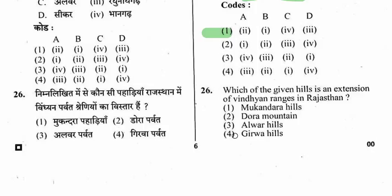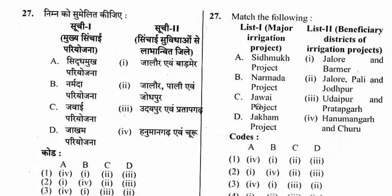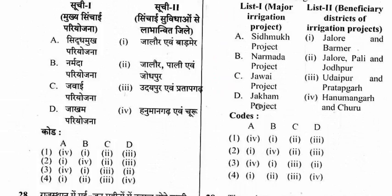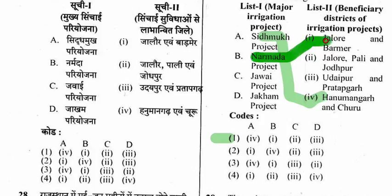Question 27: Match major irrigation projects and their beneficial districts. The right answer is option 1. Siddha Mukh project benefits Anumangarh and Churu. Naramrida project benefits Jalor and Barmer. Jawai project benefits Jalor, Pali, and Jodhpur. Jakham project benefits Udaipur and Pratapgarh.